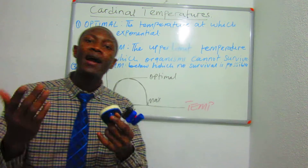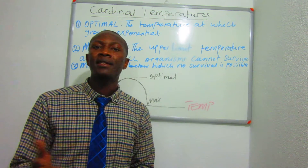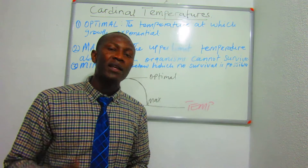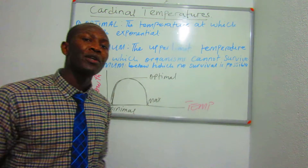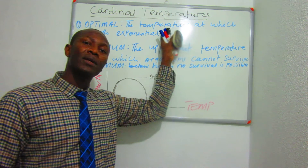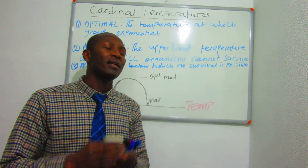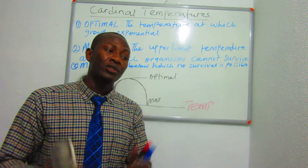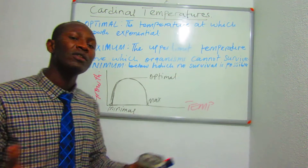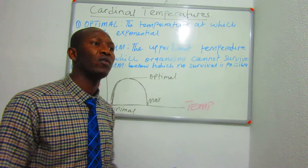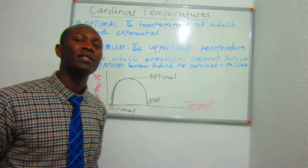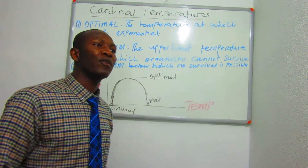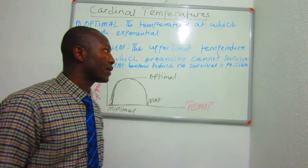The cardinal temperature of archaea might be different from that of bacteria. Even within bacteria, the cardinal temperature at the early stage of growth might differ from that at the late stage. It is not constant — it changes from one species to another, and even within one species it changes across life cycles.